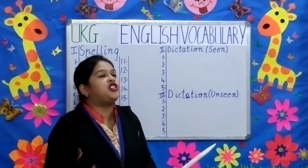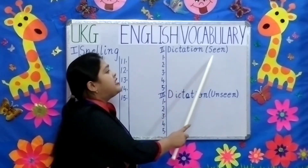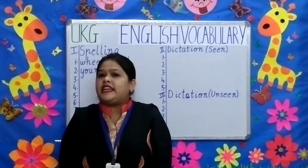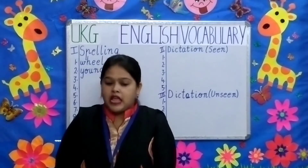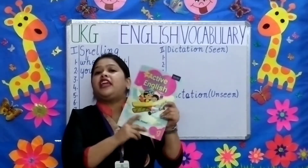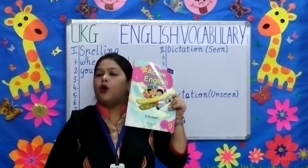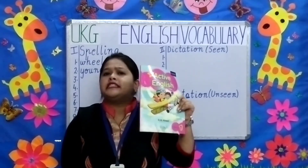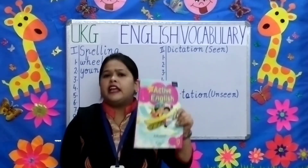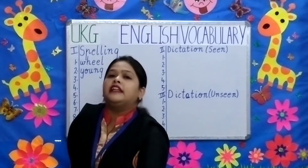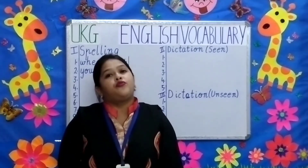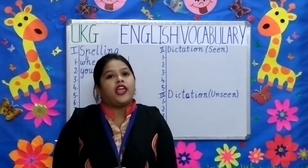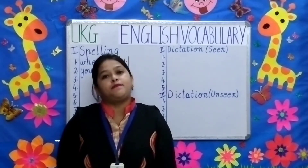The second question is dictation seen. You all will be getting 5 sentences from your active English book — any 5 sentences according to your syllabus. The teacher will call out each sentence thrice. You need to do it in the same way as you did it for the spelling.